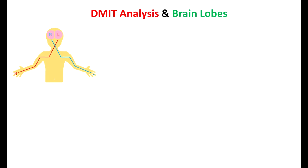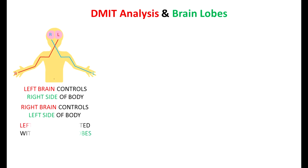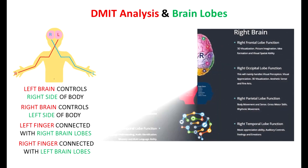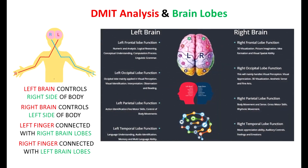In DMIT analysis, our right brain controls the left side of the body and the left brain controls the right side of the body. Likewise, left fingers are connected with the right brain lobes and right fingers are connected with the left brain lobes. During the DMIT test, we study the left brain and right brain and their lobes, and based on their functions and usages, the DMIT report is generated.